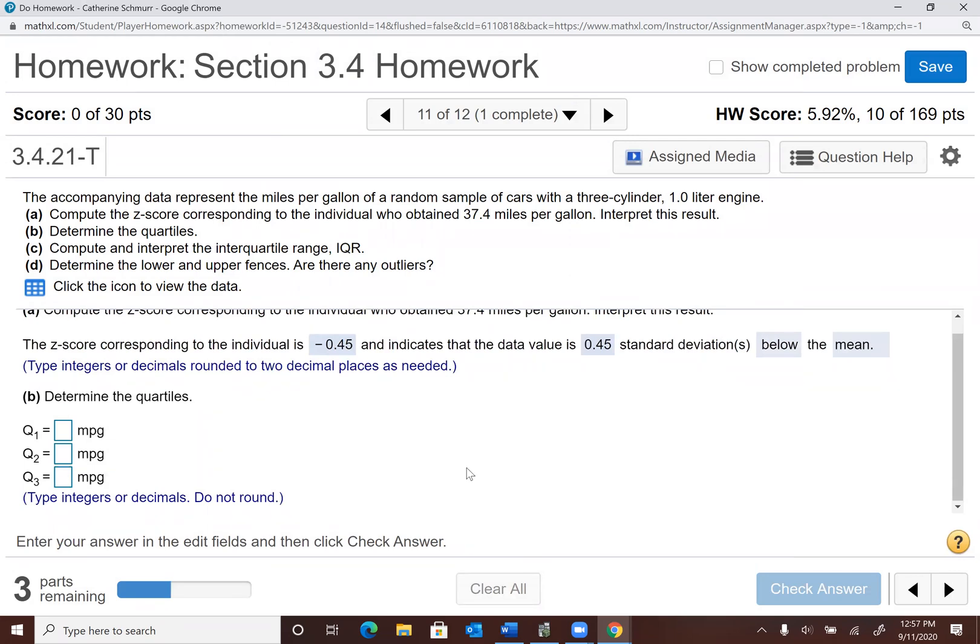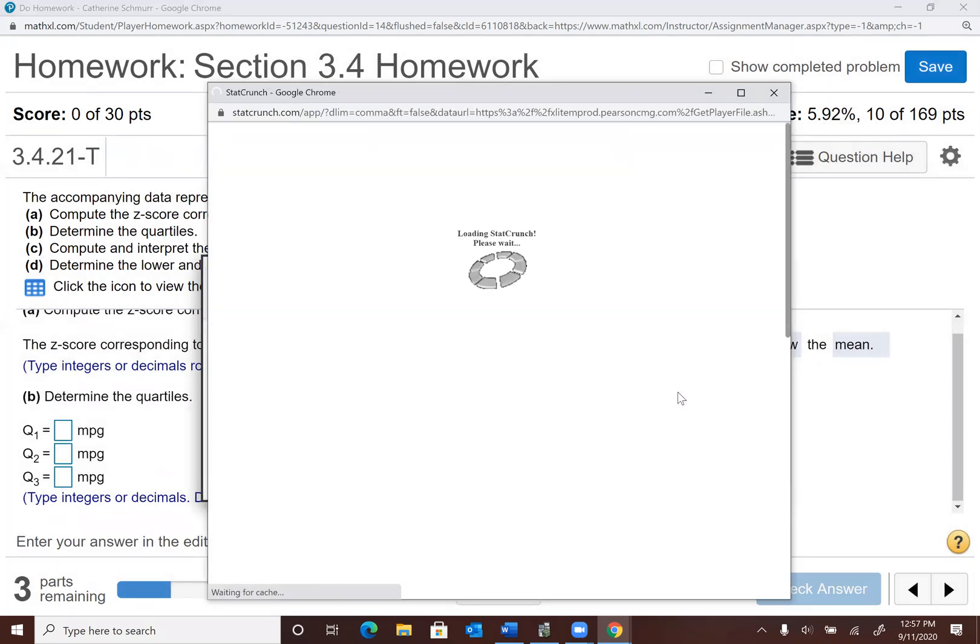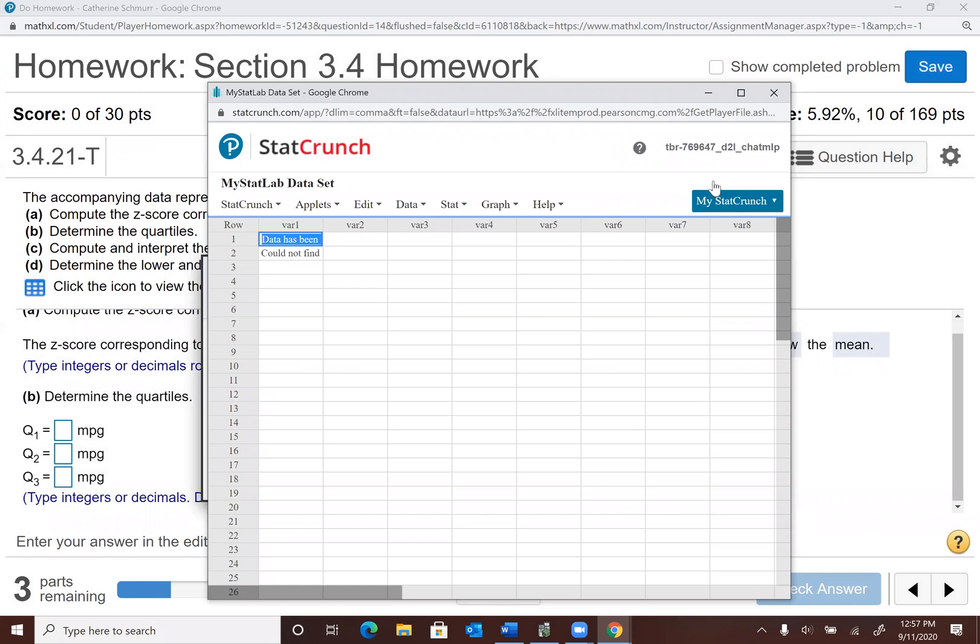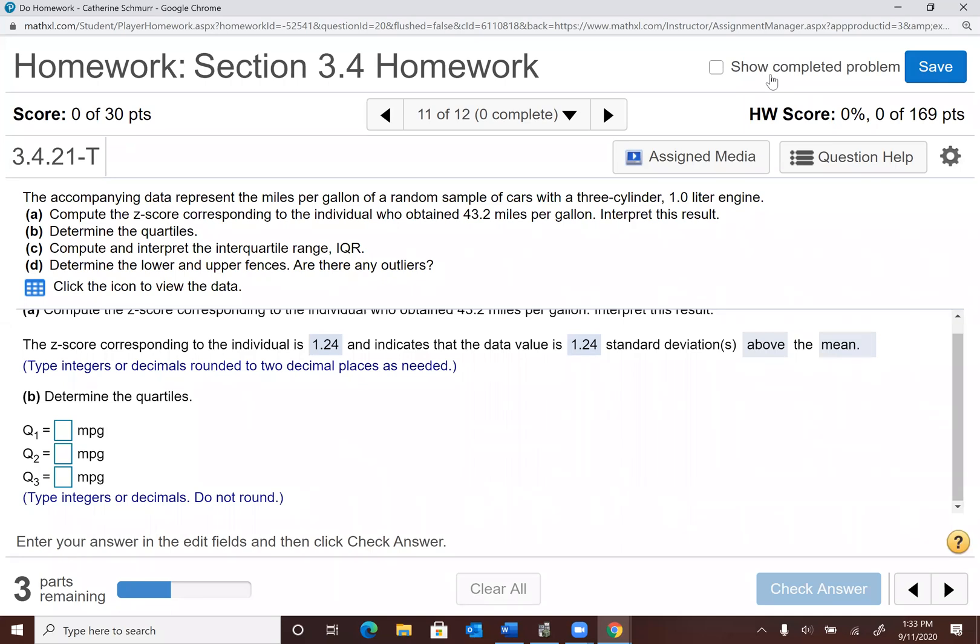Okay, quartiles are also a StatCrunch thing. So I'm going to go ahead and pull up StatCrunch again. And now my data is not loading. Okay, so I had to exit out and start a new problem because my data wouldn't load into StatCrunch. So again, this is 3.4 number 11. I'm just working with slightly different data than I was a minute ago. So on this one, I got a positive z-score of 1.24. And that indicated that the data value is 1.24 standard deviations. And because it's positive, it tells me it's above the mean.